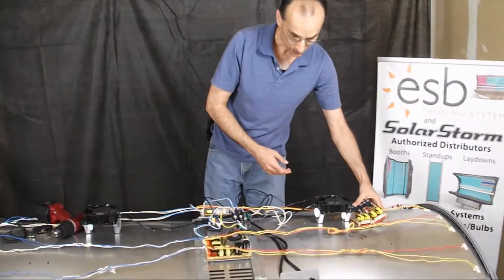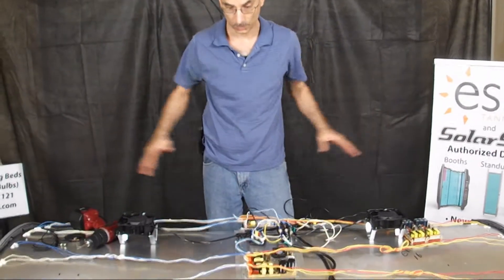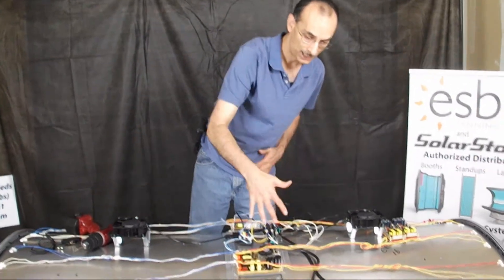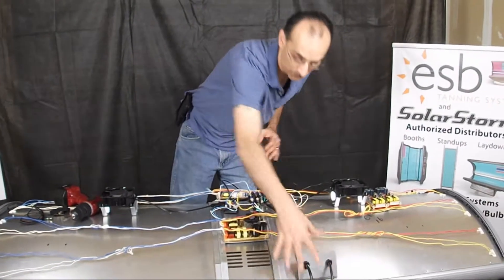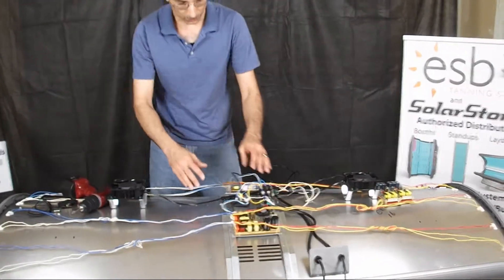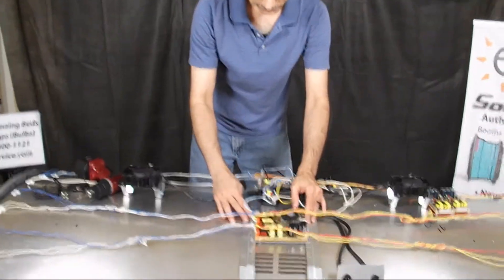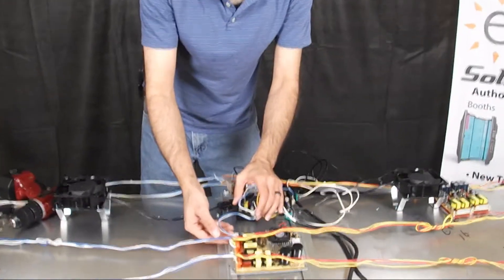For this demonstration purpose, we have the cover already removed, and you're looking at it from the back of the bed where the power cords come in. That's the perspective. Here you can see our four-lamp ballast, and it's got basically three connectors on there.